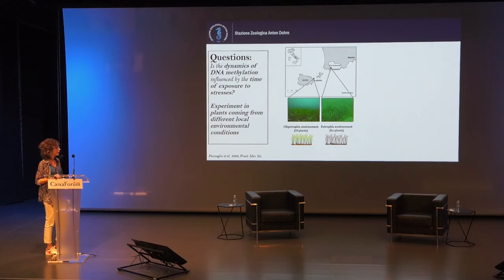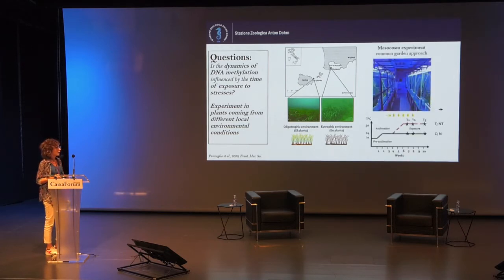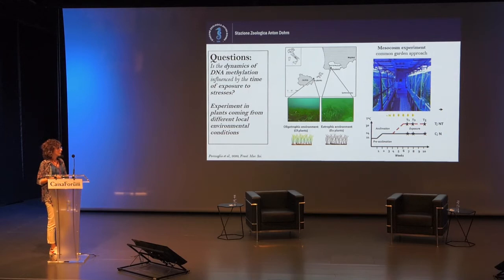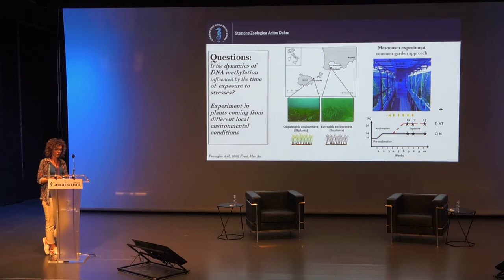Here I aim to analyze the dynamics of DNA methylation in plants collected from different environments with different nutrient conditions. Plants were collected from a more oligotrophic environment and others from a more eutrophic environment. We then applied a common garden approach using a mesocosm experiment where we exposed both groups of plants to nutrient and temperature increases, collecting leaf tissues at different time points.